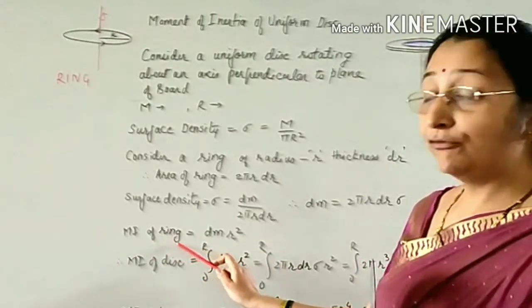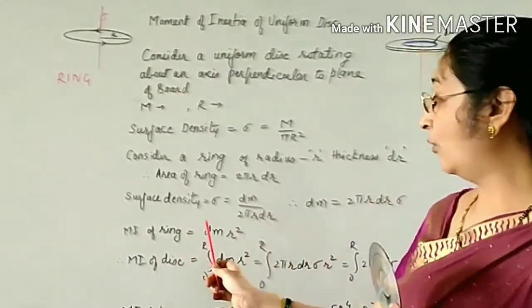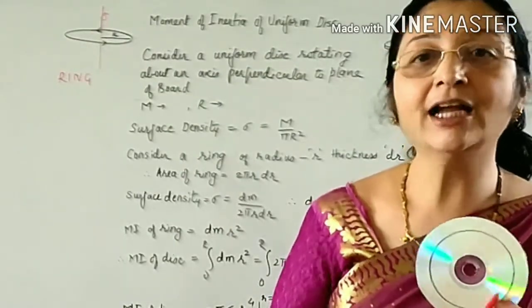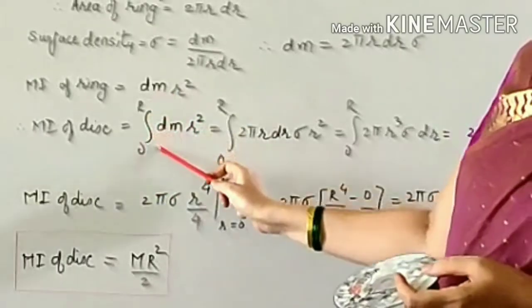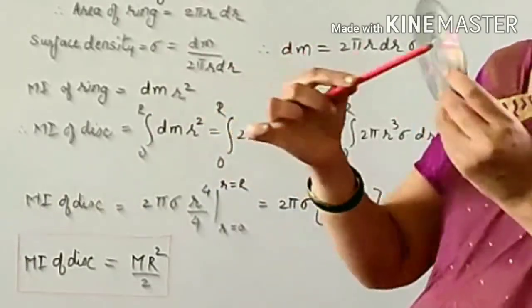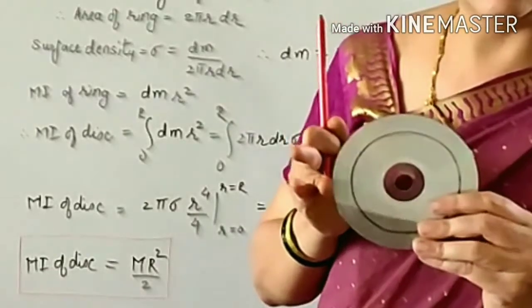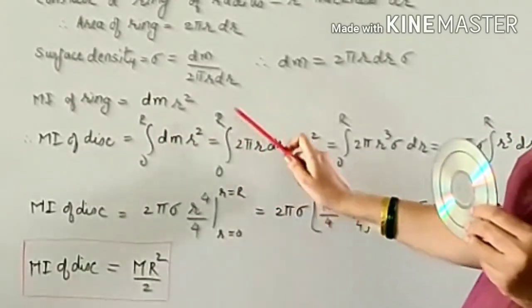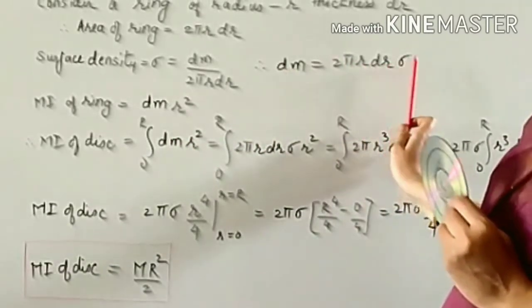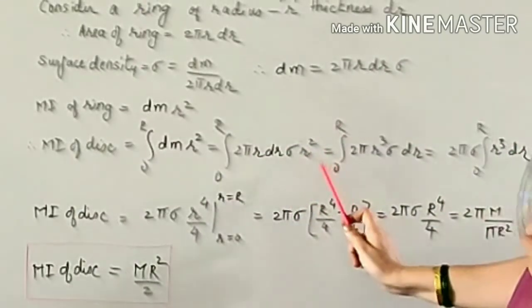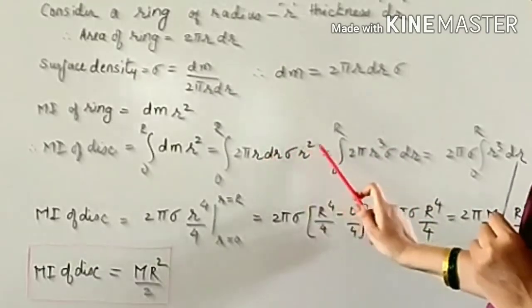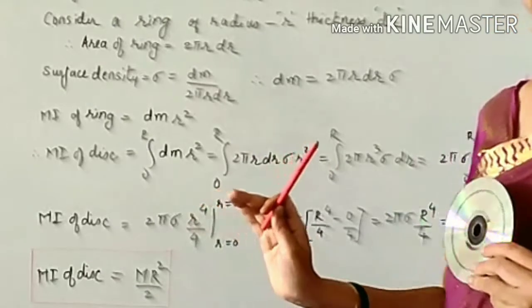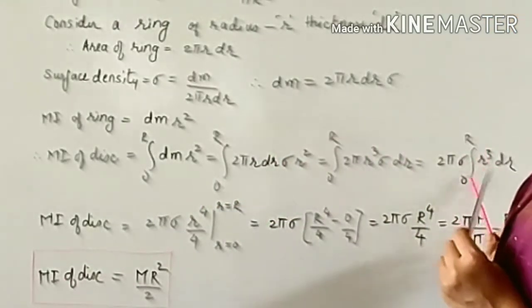The moment of inertia of this particular ring is dm·r². Since the disc is made up of many such concentric rings, the total moment of inertia of the disc is found by integration from 0 to R. So I = ∫₀ᴿ dm·r² = ∫₀ᴿ 2π·r·dr·σ·r² = 2π·σ ∫₀ᴿ r³ dr, taking the constant quantities outside the integral.